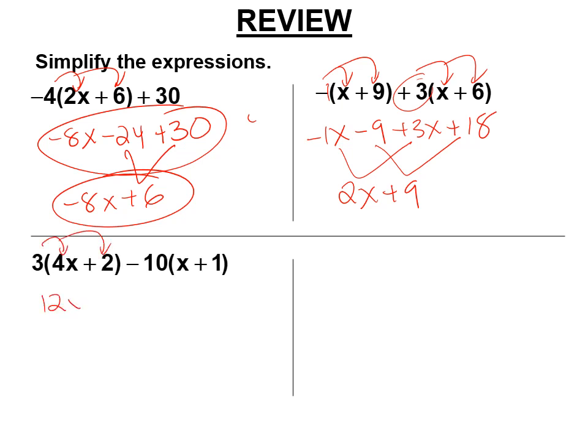3 times 4x is 12x. 3 times 2 is 6. Negative 10 times x is negative 10x. Negative 10 times 1, negative 10. 12x minus 10x, 2x. 6 minus 10, negative 4.